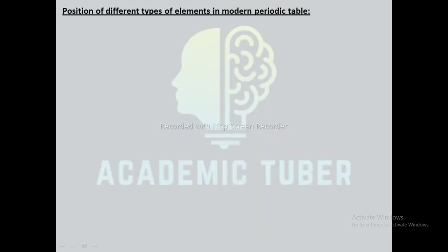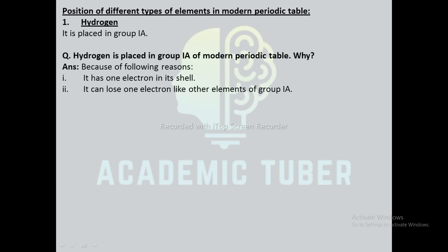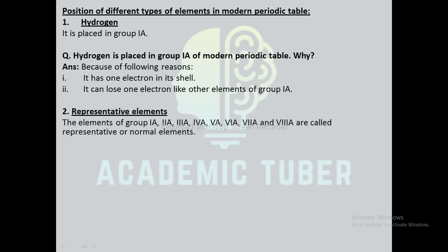Position of different types of elements in the modern periodic table. First, hydrogen: it is placed in group 1A because it has one electron in its shell and can lose one electron like other elements of group 1A. Next, representative elements: the elements of group 1A, 2A, 3A, 4A, 5A, 6A, 7A, and 8A are called representative or normal elements.